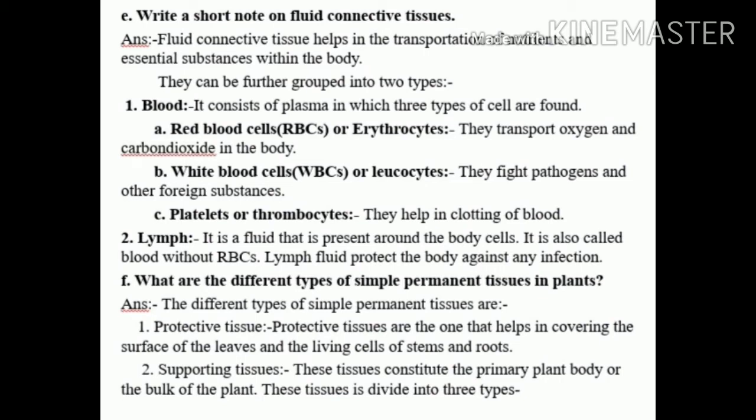Number c: Platelets or thrombocytes — they help in the clotting of blood. Number two: Lymph — it is a fluid that is present around the body cells. It is also called blood without RBCs. Lymph fluid protects the body against any infection.